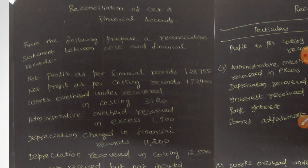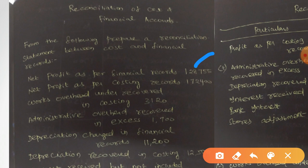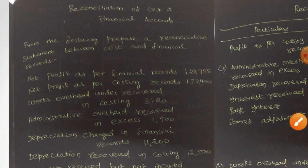It is your discretion — you can choose either costing records or financial records as your base. Since we are doing cost accounting, the better option is always to choose costing records as the base. So the very first information given is net profit as per financial records: 1,28,755. Then, net profit as per costing records: 1,72,400.